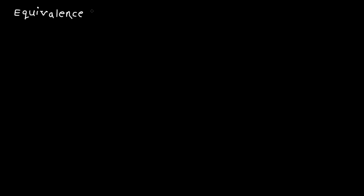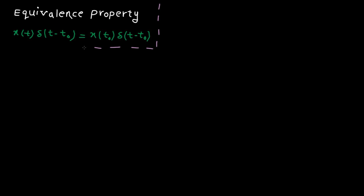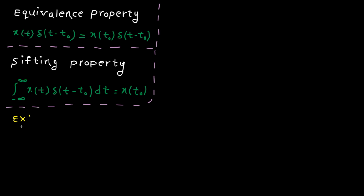Let me write down both properties again, and I'm going to use them to solve some examples. The first property is the equivalence property, and here is the sifting property. First example: sine t multiplied by a delta function shifted by pi divided by 6. I'm going to use the equivalence property with t0 equal to pi over 6.